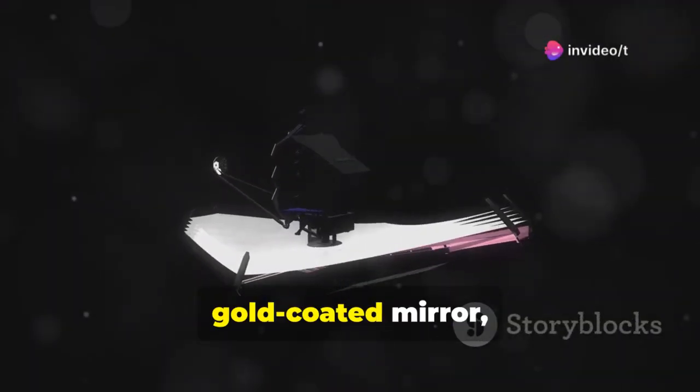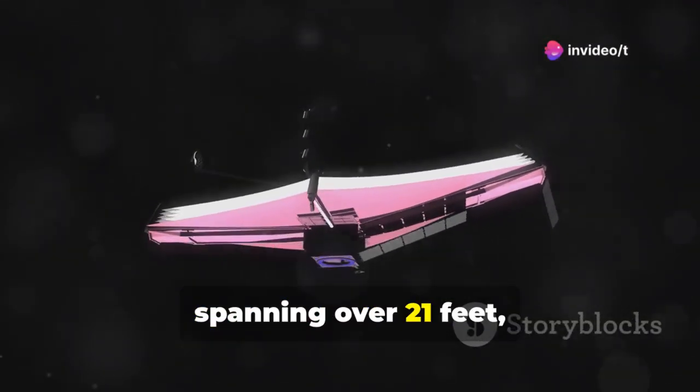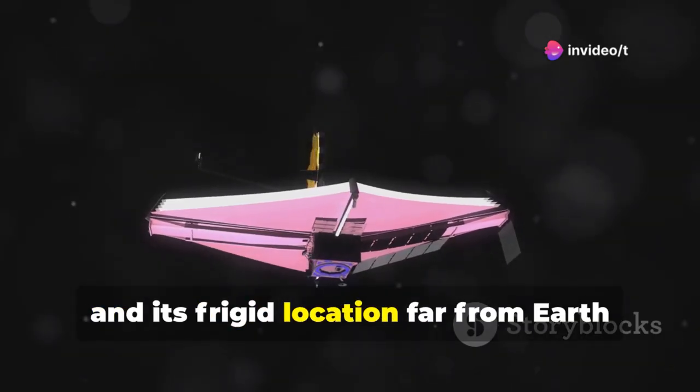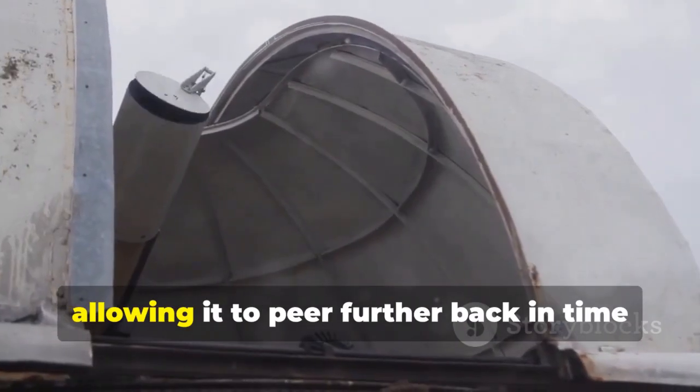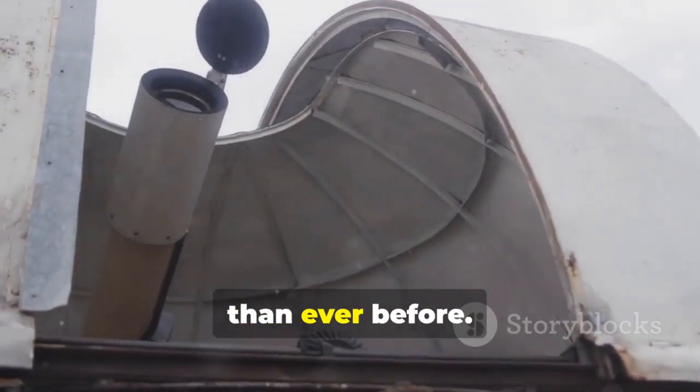Webb's massive gold-coated mirror spanning over 21 feet and its frigid location far from Earth, make it uniquely sensitive to this ancient, faint light, allowing it to peer further back in time than ever before.